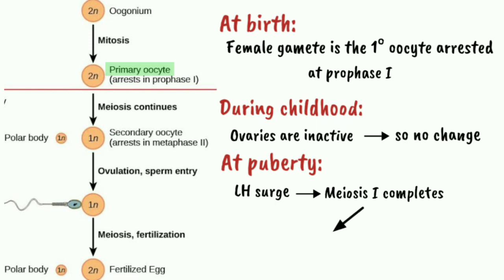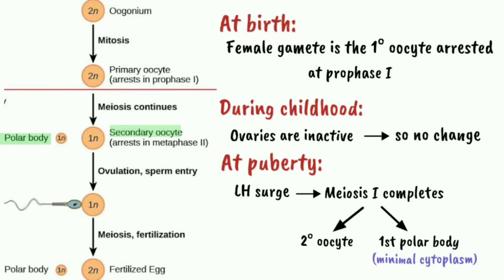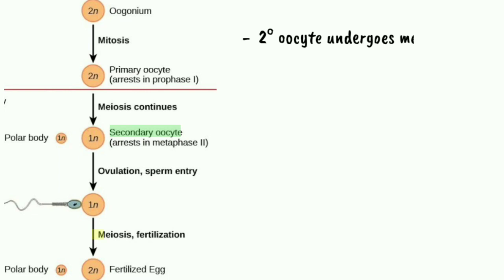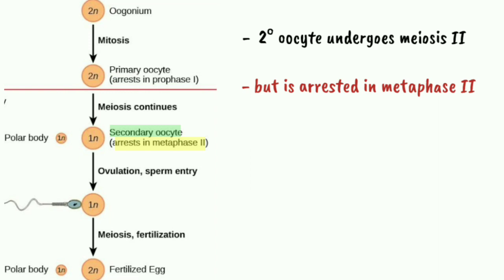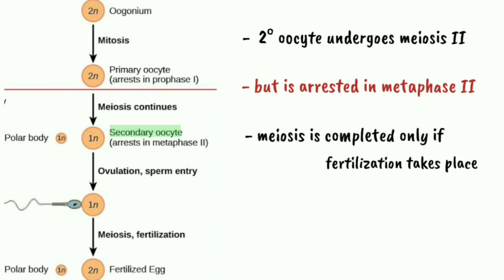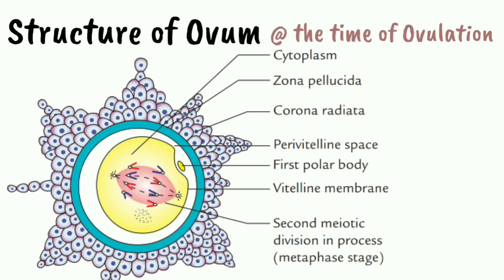Once meiosis one is completed, it gives rise to the haploid secondary oocyte along with the first polar body. Both have the same number of chromosomes, but the polar body has minimal cytoplasm. The secondary oocyte undergoes meiosis two, but is again arrested in the metaphase of meiosis two. This is completed only if fertilization takes place; otherwise it won't be completed, and fertilization results in the release of the second polar body.